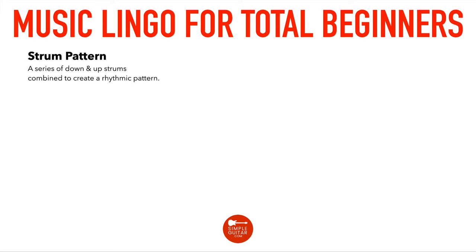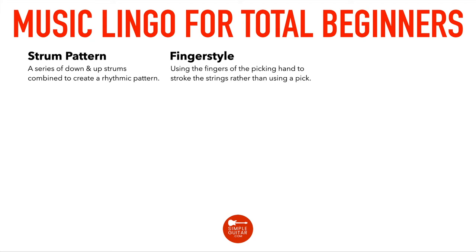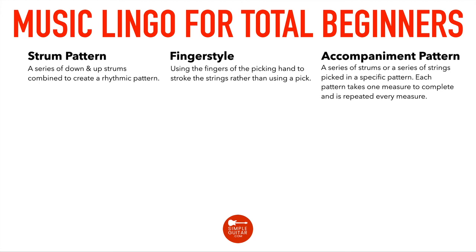Fingerstyle means using the fingers of the picking hand to stroke the strings rather than using a pick. An accompaniment pattern is when you are accompanying yourself or somebody else, usually when they're singing or playing music together. An accompaniment pattern is a series of strums or a series of strings picked in a specific pattern, where each pattern takes one measure to complete and is repeated every measure.